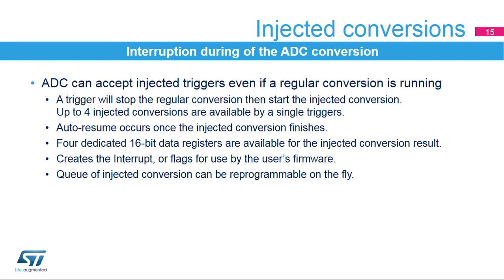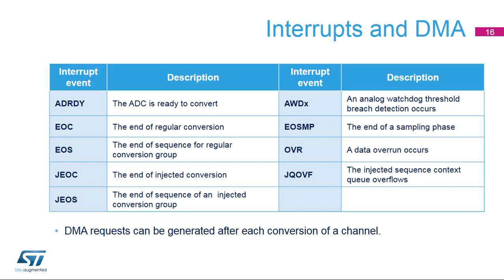An injected conversion is used to interrupt the regular conversion, then insert up to four channel conversions. Once an injected conversion is finished, the regular conversion sequence can be resumed. The injected conversion result is stored in dedicated data registers. Flags and interrupts are available for the end of conversion or end of sequence. The choices for an injected channel can be reprogrammed on the fly. Even if a regular or injected conversion is in progress, you can add a different channel to the queue so that the next injected channel can be different from the previous one. Each ADC can generate nine different interrupts.